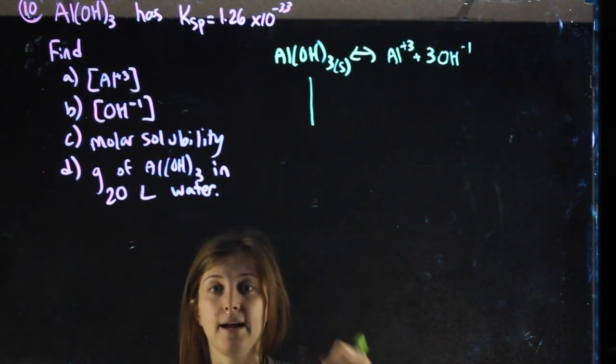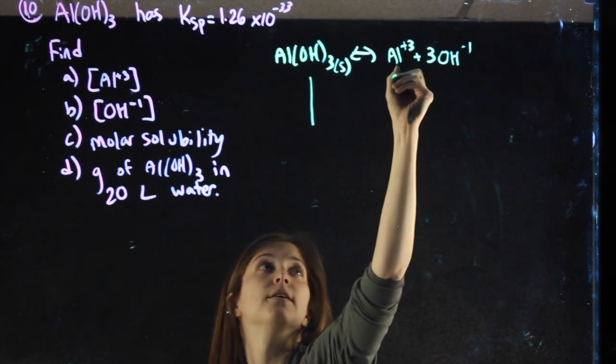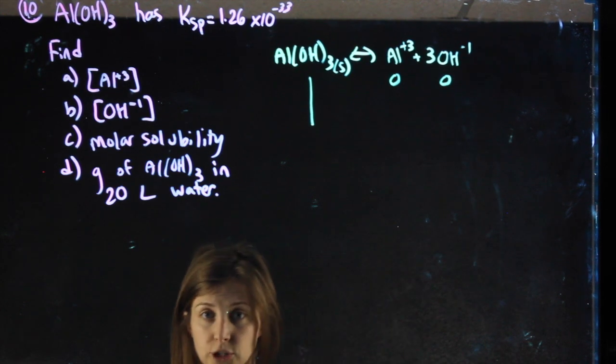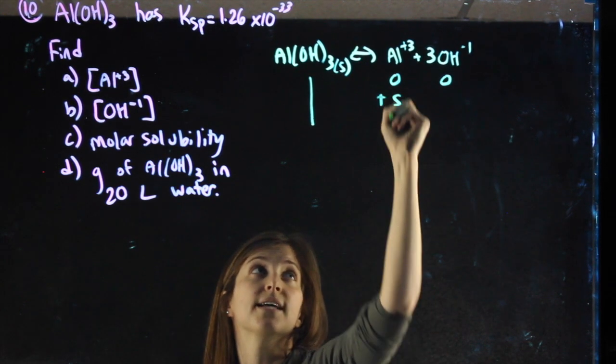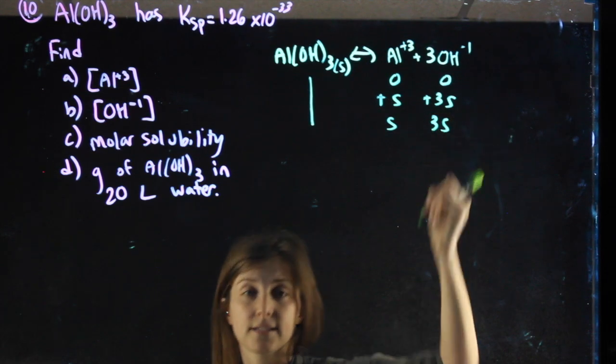I don't need to fill out my solid column. These start as zeros because there are no initial values given. Plus S is S. Plus 3S is 3S.